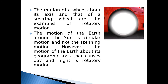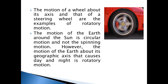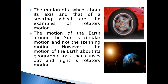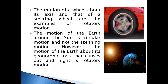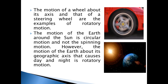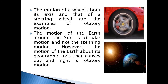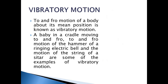The motion of a wheel about its axis and the motion of a steering wheel are examples of rotatory motion. The motion of Earth around the Sun is circular motion and not rotatory motion. However, the motion of Earth about its geographic axis that causes day and night is rotatory motion. Here you can see the Earth spinning, which is an example of rotatory motion, while Earth's motion around the Sun is circular motion.